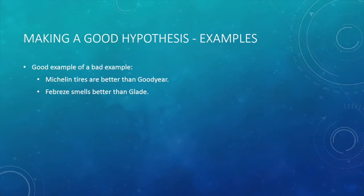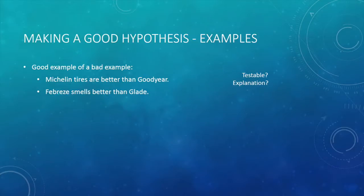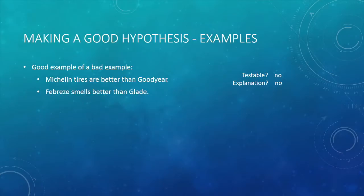When we form a hypothesis, we want to make a good hypothesis. Let's go through some examples to see what makes a hypothesis good. First, we have two examples of a bad hypothesis: Michelin tires are better than Goodyear, and Febreze smells better than Glade. Remember that a hypothesis should be a testable explanation. We can't test if Febreze smells better than Glade, or if Michelin is better than Goodyear. These statements don't answer the question why. If a statement is not testable and does not provide an explanation, then it's not a good hypothesis.